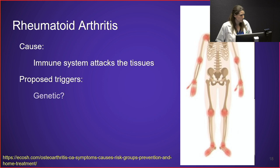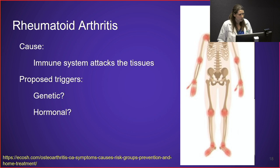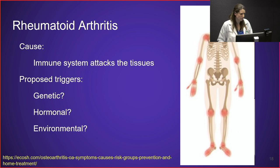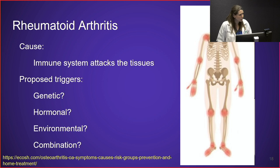We don't know exactly what causes rheumatoid arthritis. There may be a genetic component, as it sometimes runs in families and certain genes have been associated with it. Hormonal factors may play a role, as women are more affected than men, with development peaking in the 20s and 30s and again in the 50s and 60s. Environmental factors such as smoking and gum disease are associated with higher risk, and it may be a combination of genetic predisposition plus an environmental trigger.